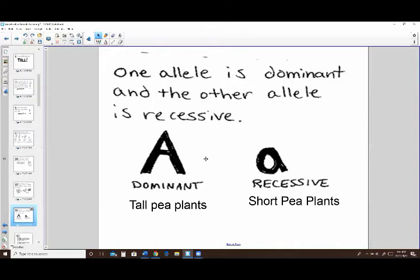We represent the dominant trait, in the case of our pea plants that was tall, we represent that gene with a capital letter. And the recessive gene, which in the case of our pea plants was the short gene, we represent with a lowercase letter.